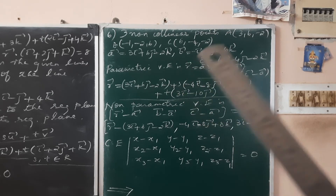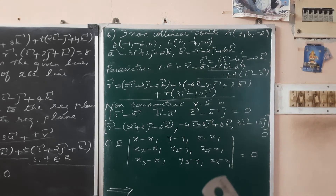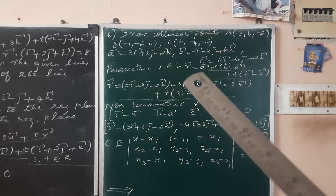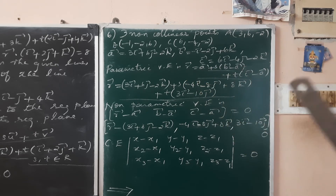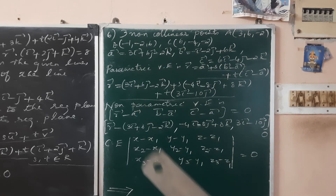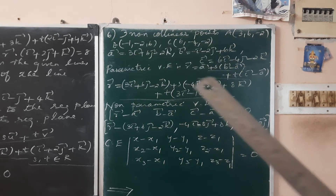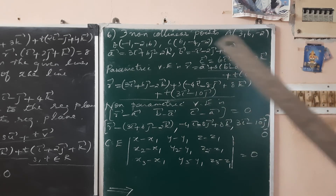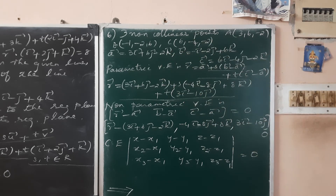We need the parametric form, non-parametric form, and Cartesian form — three parts for a 5-mark ideal question. The parametric form of the vector equation is R vector equals a vector plus s times (b minus a) vector plus t times (c minus a) vector. Substitute a vector as the first point, compute b minus a and c minus a by subtraction. The k components cancel.